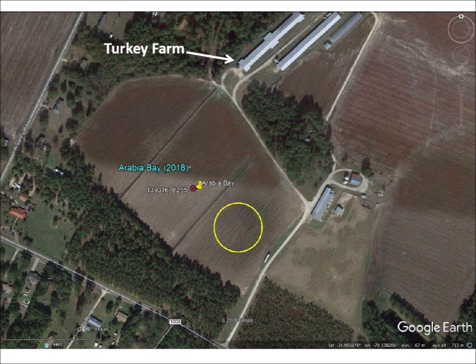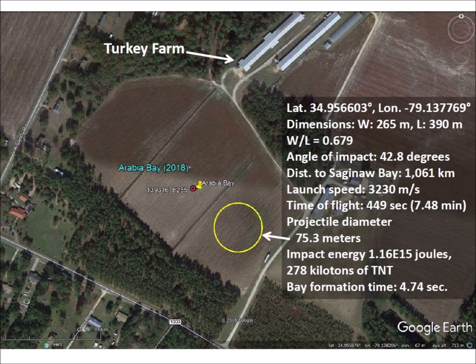The satellite image of the same area shows the plowed fields in the center of the bay and the turkey farm buildings located outside of the bay. The yellow circle has a diameter of 75 meters, which is approximately the size of the glacier ice boulder that made the bay.